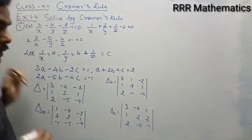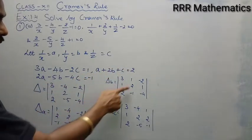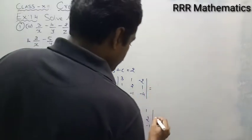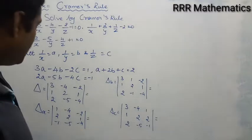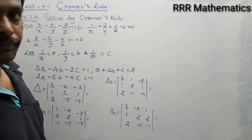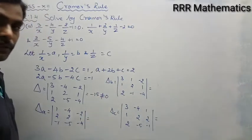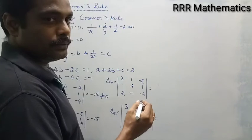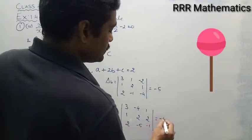Delta is your coefficient of a, b, c. Delta_a replaces the first column by constant values. Delta_b replaces the second column, and Delta_c replaces the third column. Now expand the determinants. The value of Delta is minus 15, which is not equal to 0. Delta_a is also minus 15. Delta_b is minus 5, and Delta_c is also minus 5.